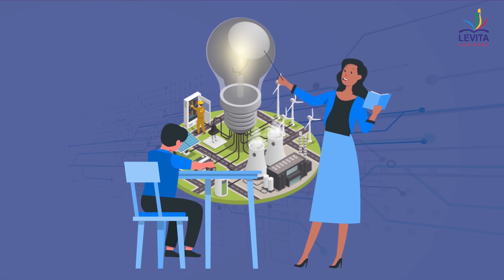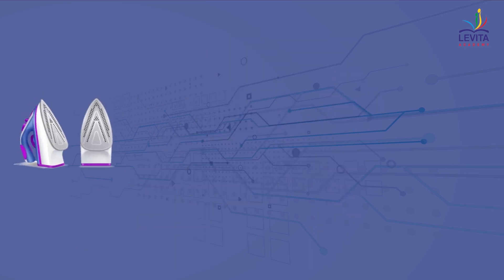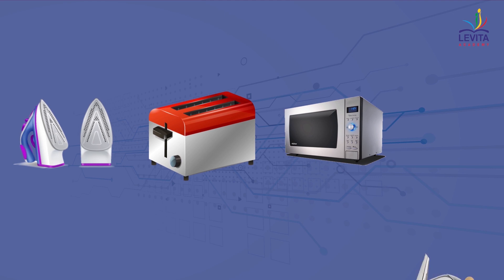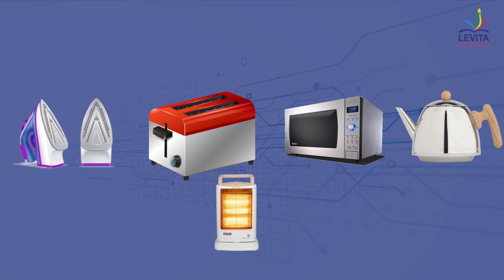But the heating effect also has many useful applications. For instance, the electric laundry iron, electric toaster, electric oven, electric kettle and electric heater are some of the familiar devices based on Joule's heating which utilizes the heating effect of electric current.